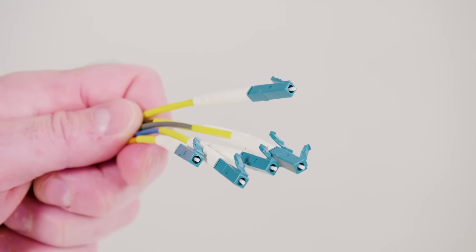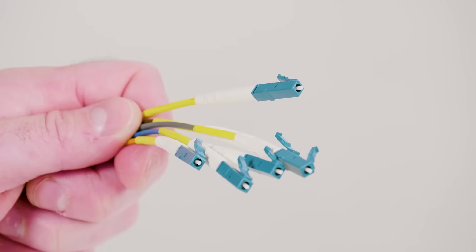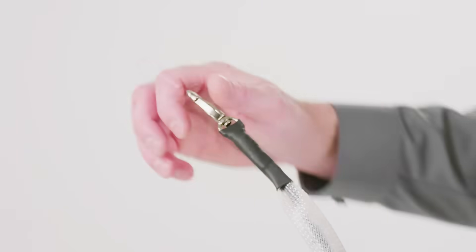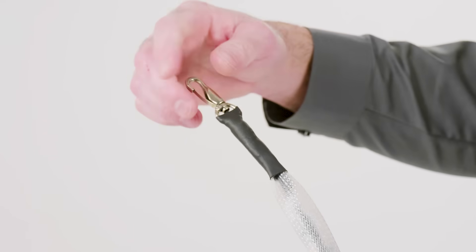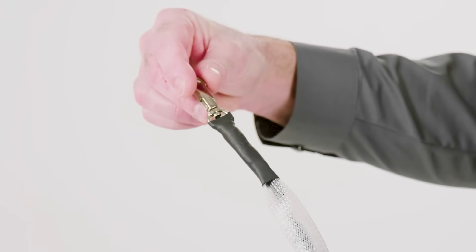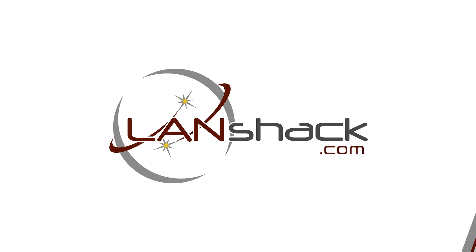Our assemblies are fully tested and serialized and the results come with the assembly. We offer optional pulling eyes that include a swivel hook to prevent the cable from twisting during the pull. Pulling eyes are always recommended as they make your cable pull much easier and also provide further protection of your connectors.